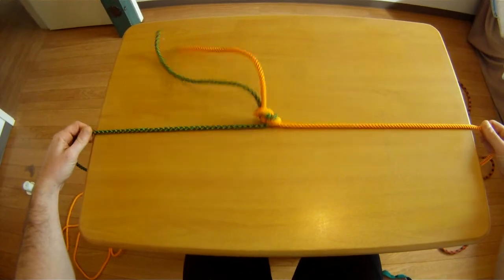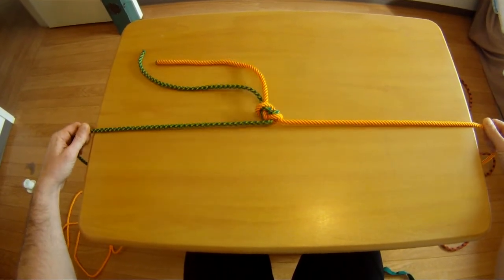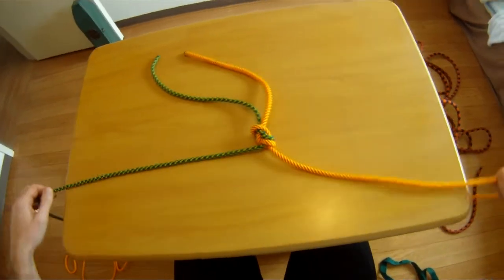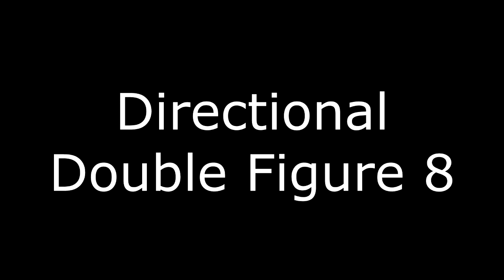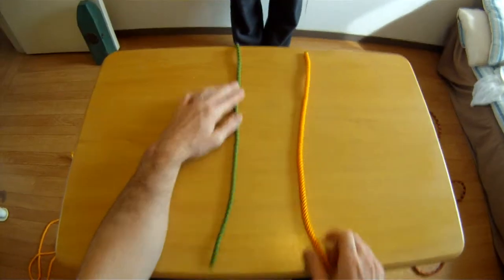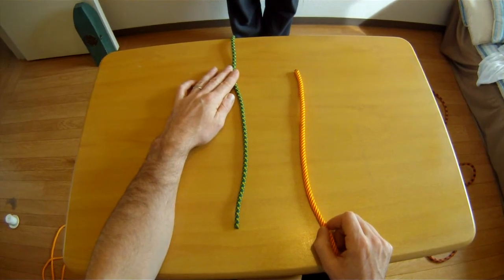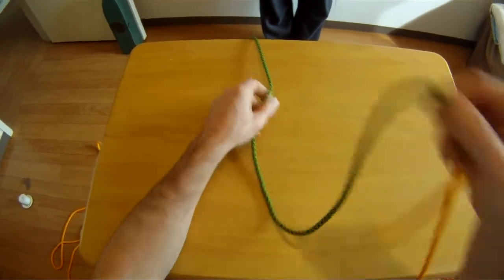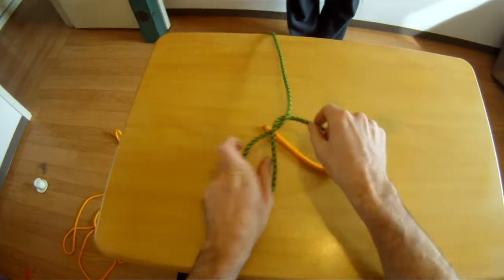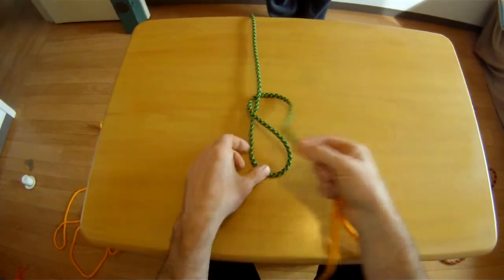However, some people like the flat knots for rappelling, because they tend not to get stuck. A better knot for rappelling would be the directional double figure eight. So, taking two ropes, joining two ropes, but you join them in opposite directions. Take either rope, either one, and tie a single figure eight.